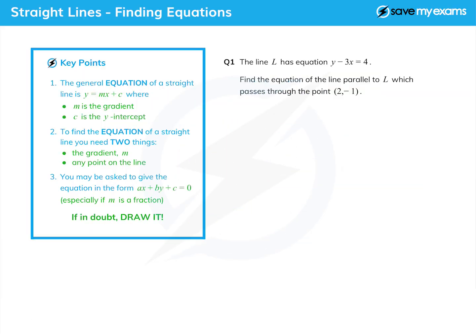So here we're going to look at finding the equation of a straight line given other information. Just to remind ourselves, the general equation of a straight line is y equals mx plus c, and the number in front of the x, that's m, is the gradient, and c is where it crosses the y-axis, often known as the y-intercept.